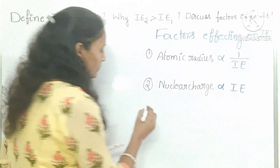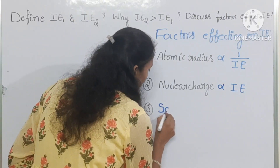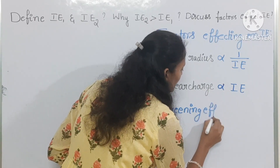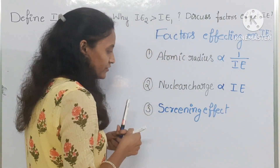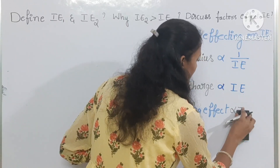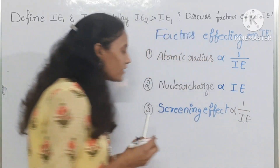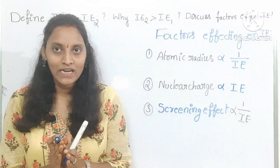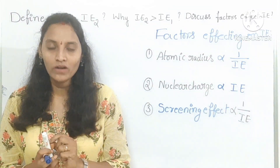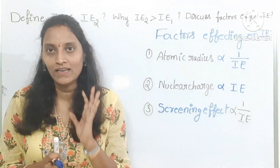The third factor is screening effect, also known as shielding effect. Screening effect is inversely proportional to the ionization enthalpy because the screening effect decreases the force of attraction on the outer shell. So less energy is required to remove an electron. If screening effect is more, the required energy is less.